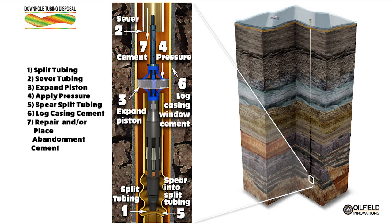The first step is to split the tubing vertically. The second step is to sever the tubing horizontally above the split tubing. The third step is to expand a piston above the severed tubing. The fourth step is to apply pressure to the expanded piston so as to push the severed tubing into the split tubing, which comprises the fifth step of spearing the severed tubing into the split tubing. This provides a space for the sixth step, which is bond logging of the casing. Once the pressure integrity of the casing cement has been established, the seventh step is to repair any damaged casing cement and place an abandonment cement plug to isolate the lower formations from surface formations and our environment.